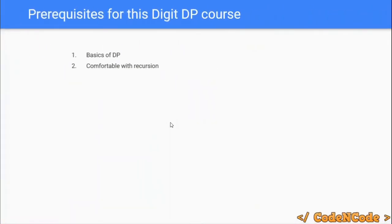Those are some examples of digit DP problems we will be solving. The prerequisites for digit DP: you should have some experience with dynamic programming, specifically concepts like memoization and transitions. I'm assuming you are aware of basic DP concepts. The second prerequisite is that you should be comfortable with recursion, because I'll be solving all those problems using recursive DP, not iterative ones. If not, I highly advise you to go practice recursion problems.